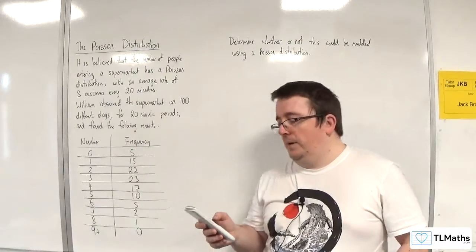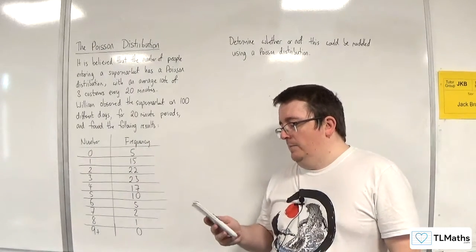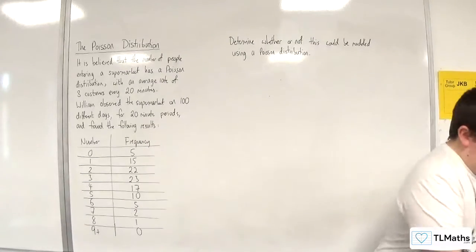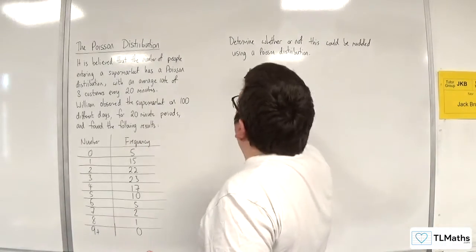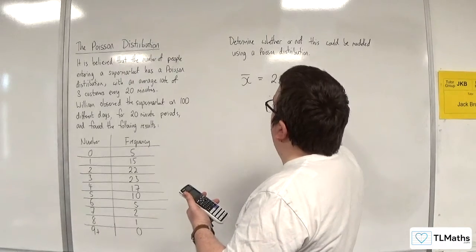So I've got my data plugged into my calculator. I go to option, so top left option key, and then number 3, one variable calculation. And what I'm getting is x bar, the mean, is 2.98.